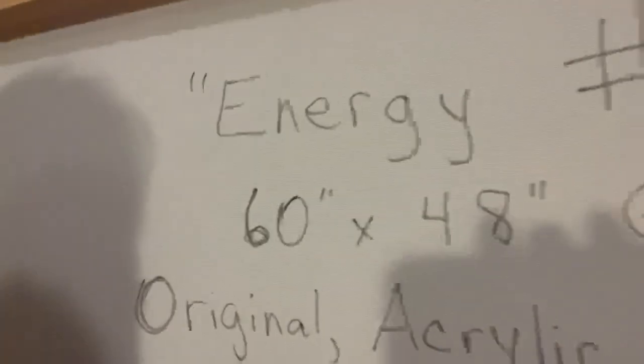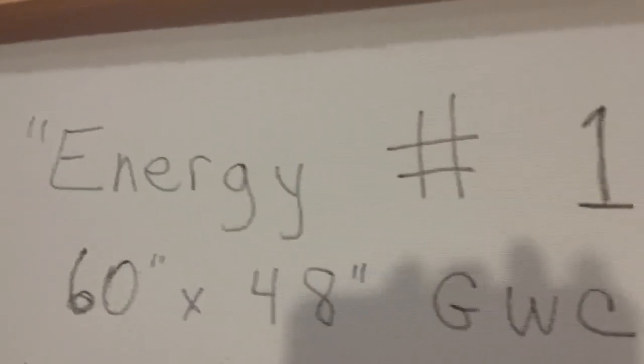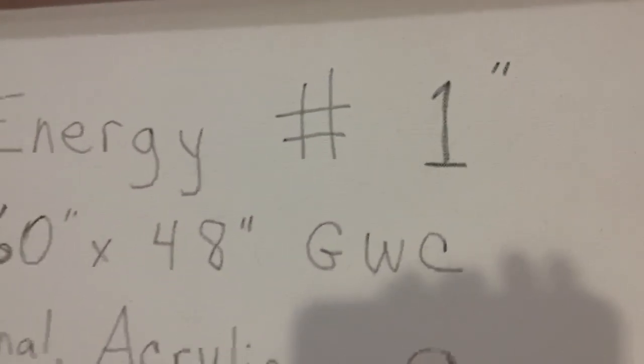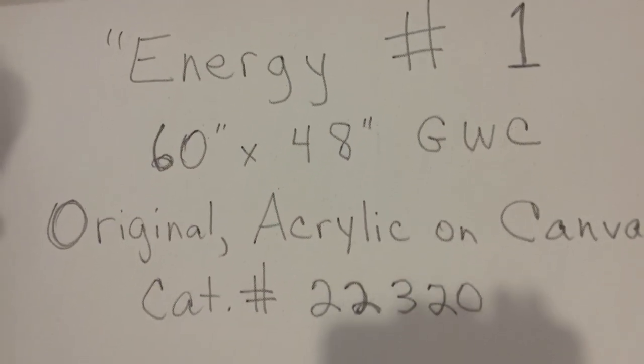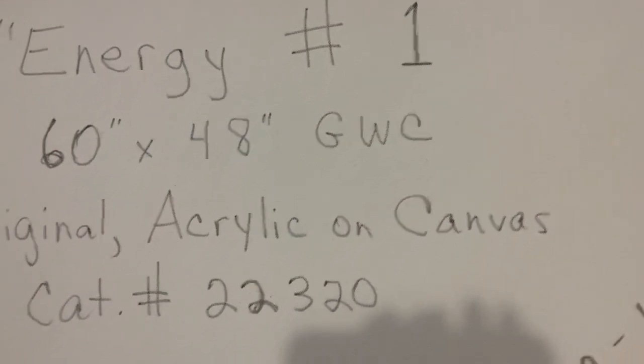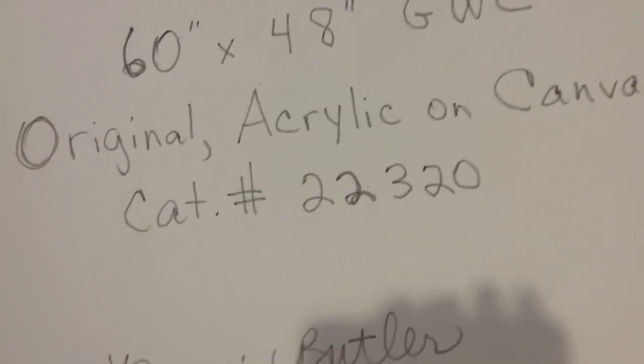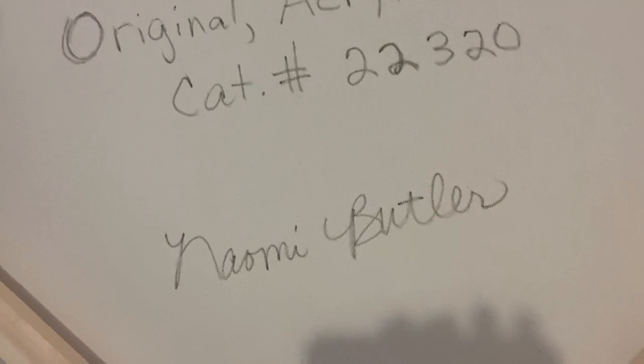Now you see my shadowed image here. I'm gonna take the phone out of here and go close up and show you how I did this. So I've got Energy Number One, the size, original acrylic on canvas, the catalog number, and my signature.